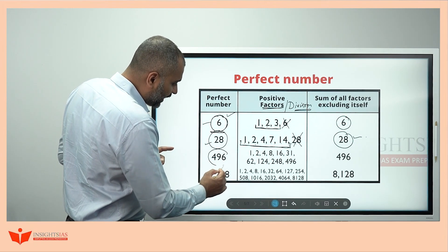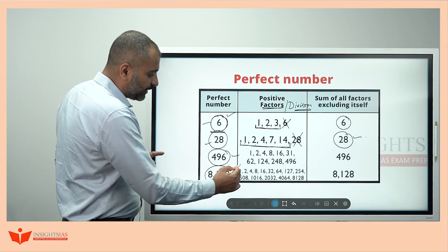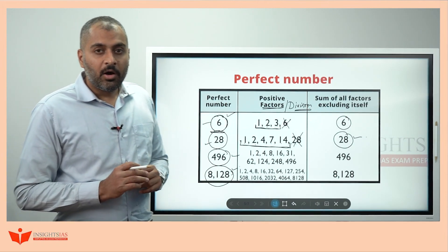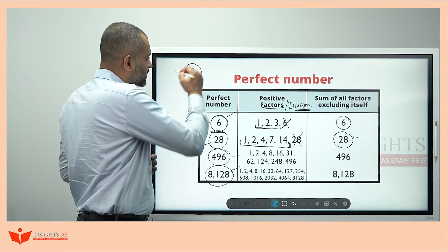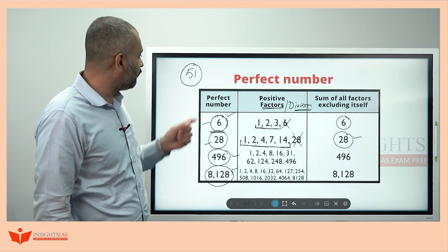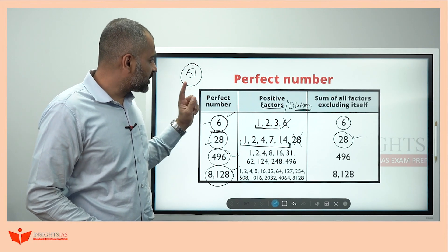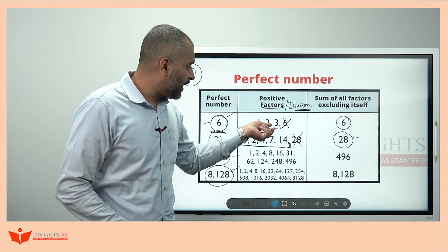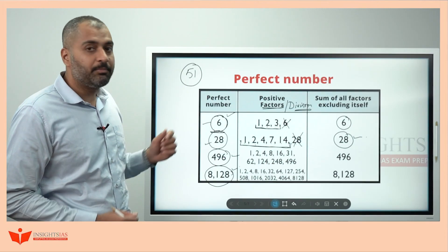Similarly, 496 is a perfect number. 8128 is a perfect number. Only 51 such numbers are recognized till now. Not all the numbers are perfect numbers. Only till now, 51 such numbers are recognized. Perfect numbers are the numbers whose sum of the factors other than itself is the number itself. Then, it is called a perfect number.